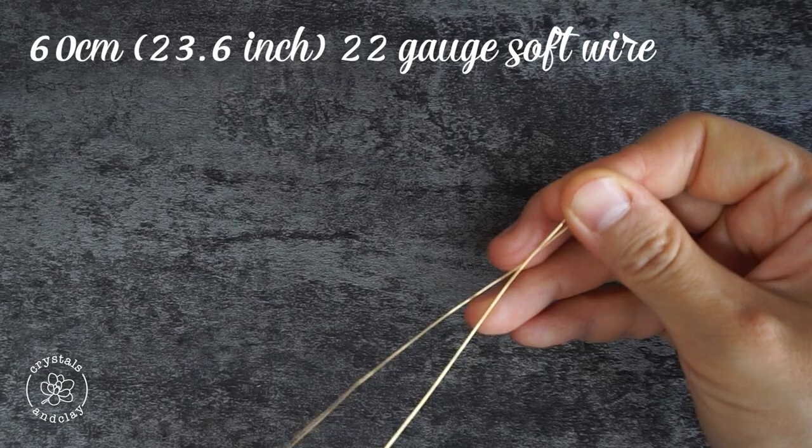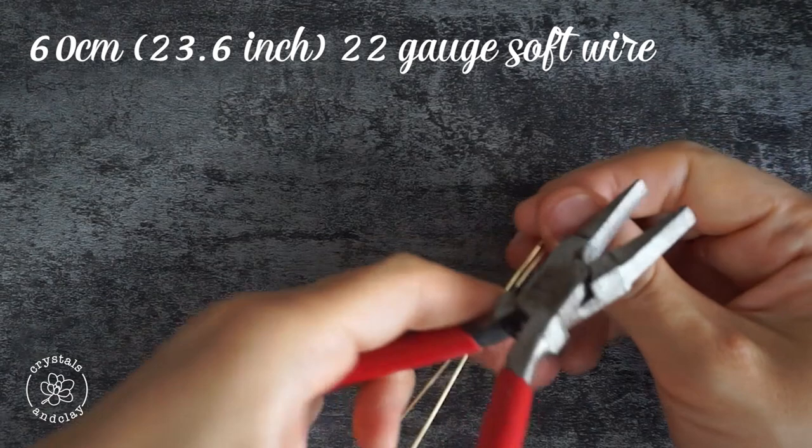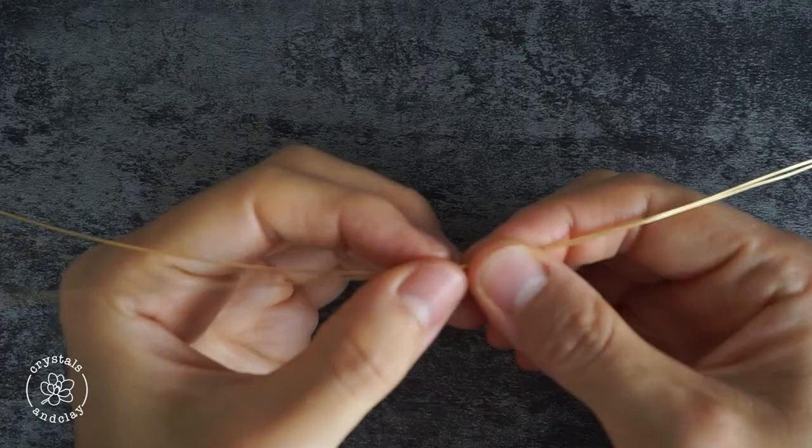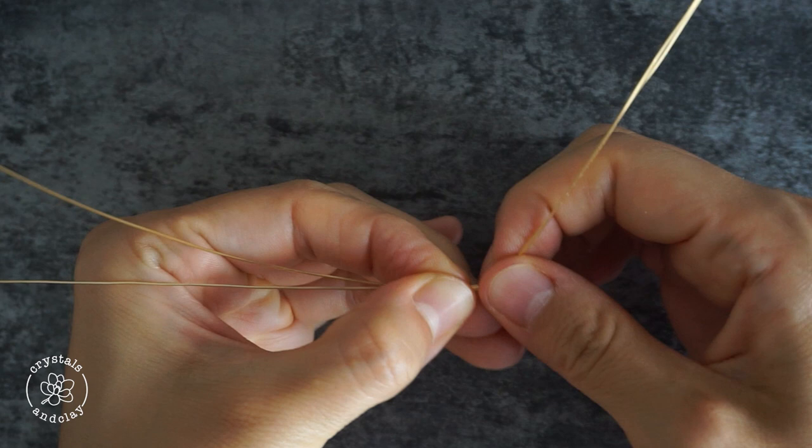Starting with a piece of 60cm 22 gauge soft wire, bend the wire in half using a flat nose plier. Make a small loop in the middle of the wire using your fingers. Make sure the two wires are parallel to each other.